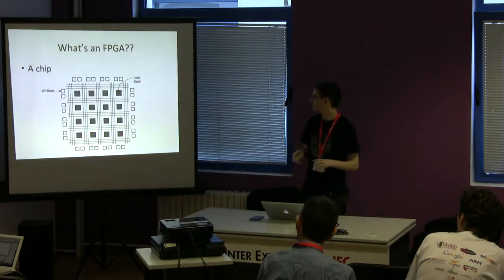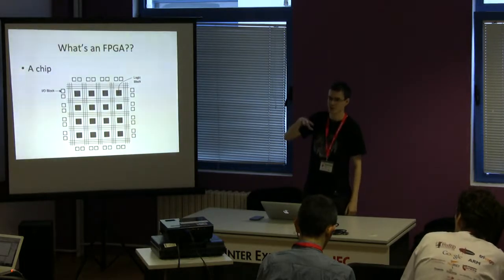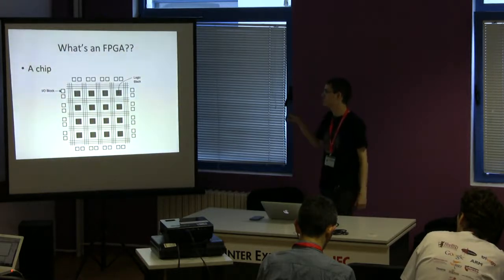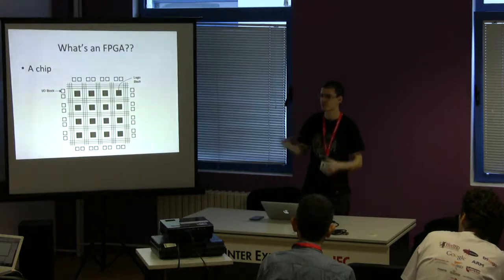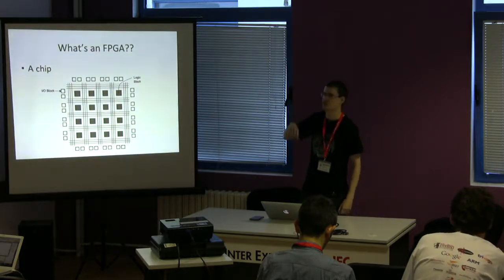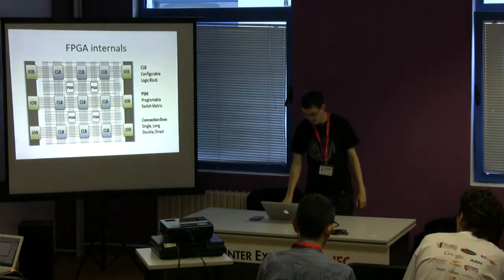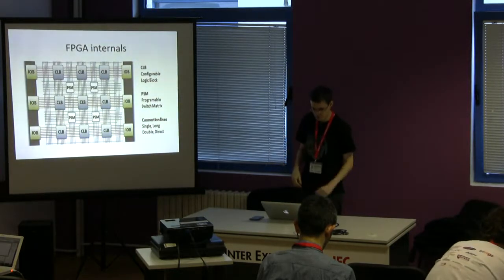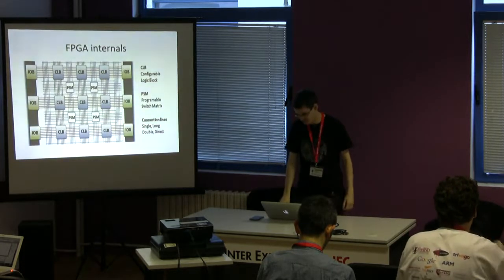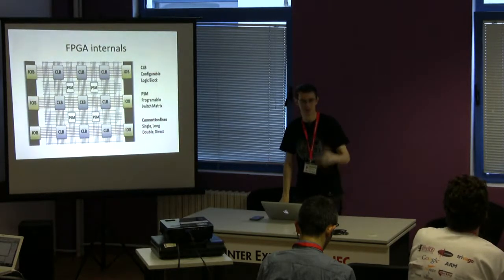What's an FPGA? It's a chip like any other, but you can configure it to behave the way you want. You've got logic blocks arranged as an array, and IO blocks. You can configure each logic block to perform logic operations like AND, OR, XOR, and so on. Then you have a switching matrix that lets you interconnect those logic blocks, and you decide which block connects to which, essentially creating a logic circuit — almost like a free ASIC chip.